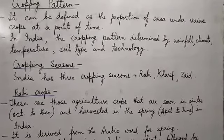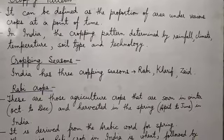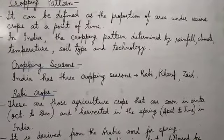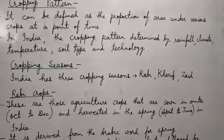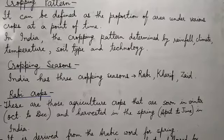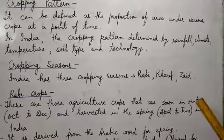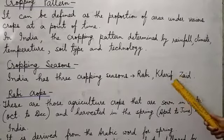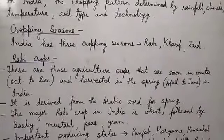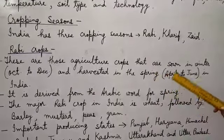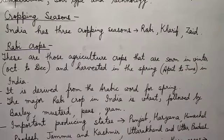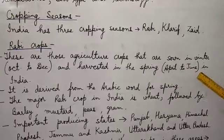The next topic is cropping seasons. India has three important cropping seasons: Rabi, Kharif, and Zaid. The agricultural season is the time period between sowing and harvesting. Rabi crops are those agricultural crops that are sown in winter — from October to December — and harvested in spring or summer, from April to June in India.